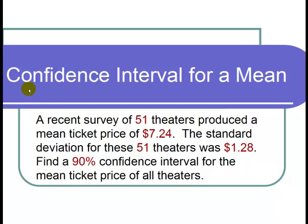This is a video about a confidence interval for a mean. The question states: a recent survey of 51 theaters produced a mean ticket price of $7.24. The standard deviation for these 51 theaters was $1.28. Find a 90% confidence interval for the mean ticket price of all theaters.